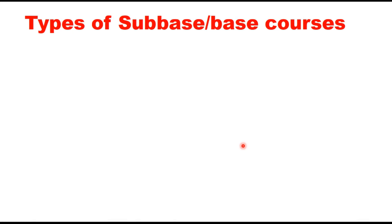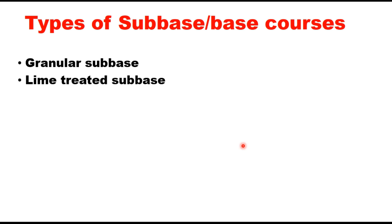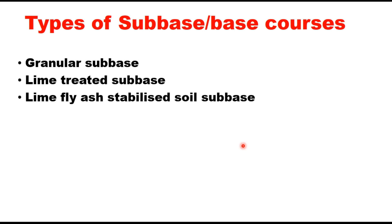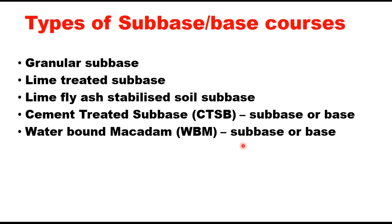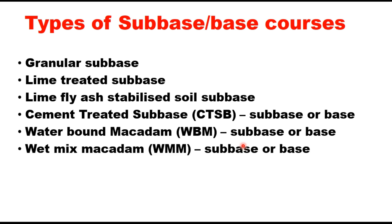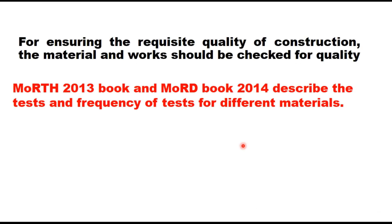Base and sub-base layers in a flexible pavement form a major part of the pavement thickness, and quality of these layers will certainly lead to long life and low maintenance cost of the pavement. There are several types of materials that can be used in sub-base or base course layers. As per specifications, it can be a granular sub-base, lime treated sub-base, cement treated sub-base, lime fly ash stabilized soil sub-base, or water bound macadam and wet mix macadam.